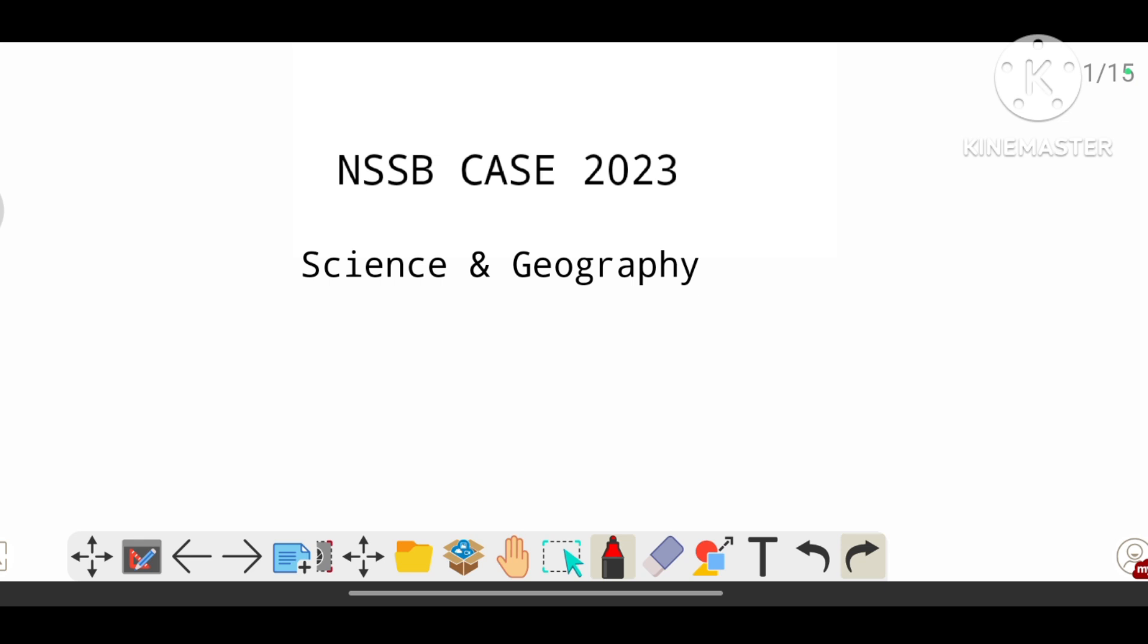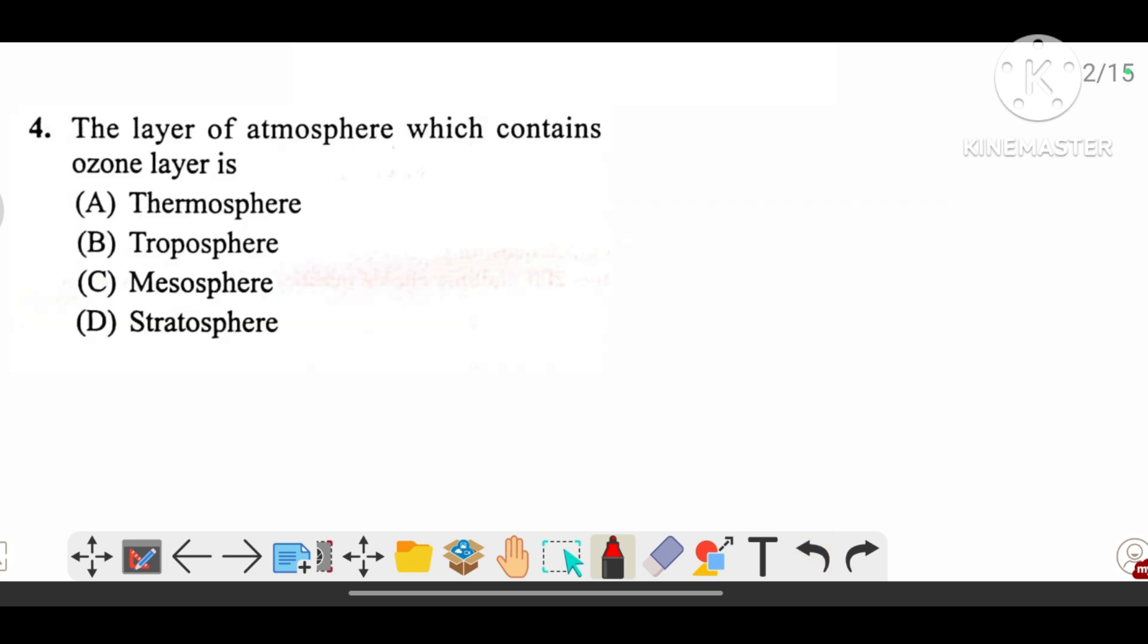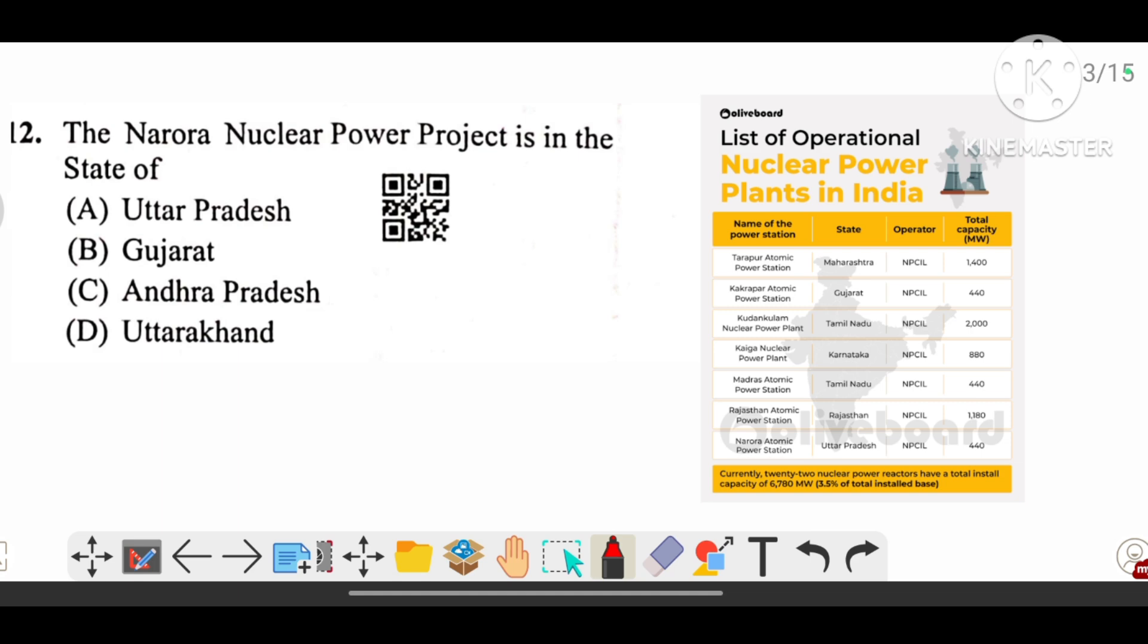In this video we will learn some science and geography questions from the NSSB CSE 2023, so let's start. The first question: the layer of atmosphere which contains the ozone layer. The answer is stratosphere. The Narora nuclear project is in the state of Uttar Pradesh.